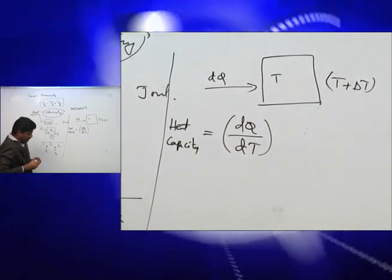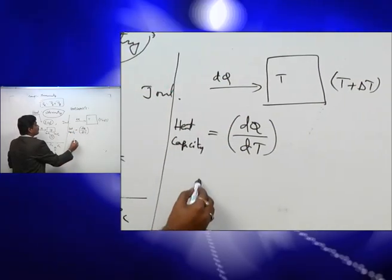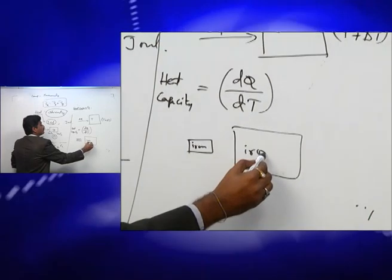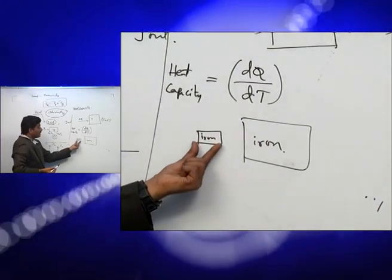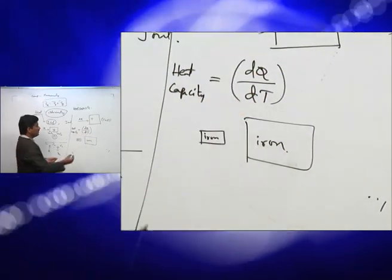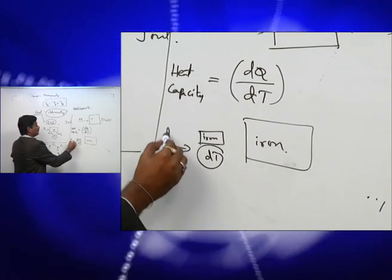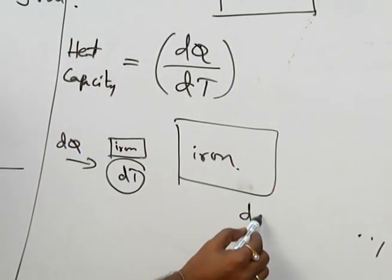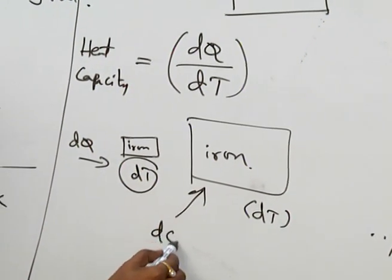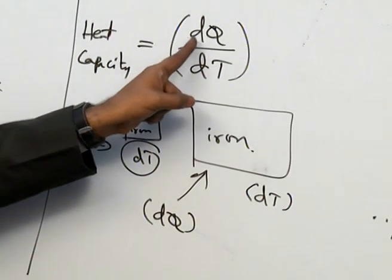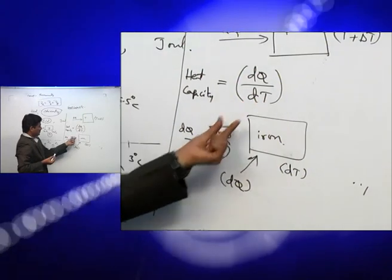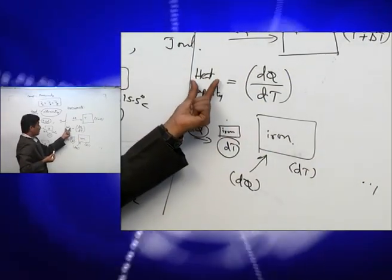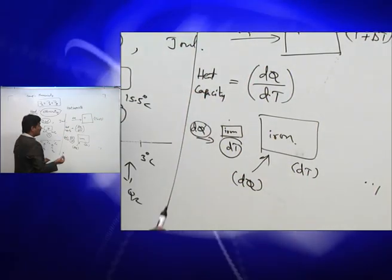However, heat capacity cannot be taken as a standard value. For example, if we have a small piece of iron and a larger piece of iron, the smaller one requires some DQ to raise its temperature by DT, whereas the larger mass requires more DQ for the same DT. So DQ varies from one mass to another, and we cannot treat heat capacity as a standard quantity without considering mass.